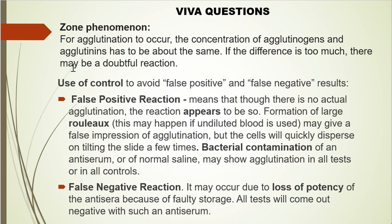Important viva questions: The Zone phenomenon states that for agglutination to occur, the concentration of agglutinogen and agglutinin must be similar - if they vary too much, agglutination won't occur, giving a false negative result. A control is used to avoid false positive and false negative results. False positive can occur due to rouleaux formation or bacterial contamination. False negative can occur due to loss of potency from faulty storage.